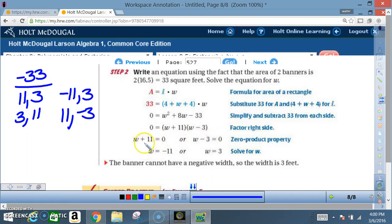I subtract 11 on both sides, minus 11, minus 11. I get that w equals negative 11. Or I add 3 on this side, adding 3 on this side, w equals 3. The banner cannot have a negative width, so the width is 3 feet. Negative 11 is thrown away.